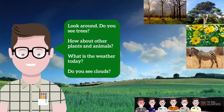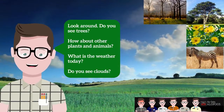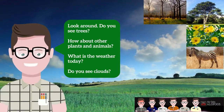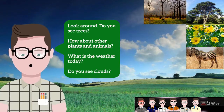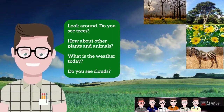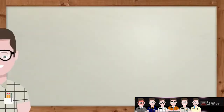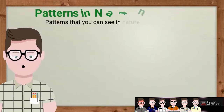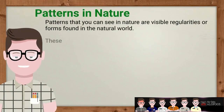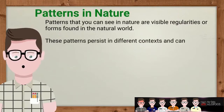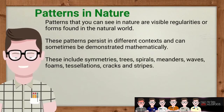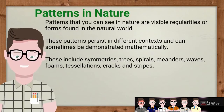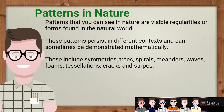Have you ever stopped to look around and notice all the amazing shapes and patterns we see in the world around us? Mathematics forms the building blocks of the natural world and can be seen in stunning ways. Patterns are defined as regular, repeated, or recurring forms or designs. Patterns in nature are visible regularities of form found in the natural world, and these patterns recur in different contexts and can sometimes be modeled mathematically.